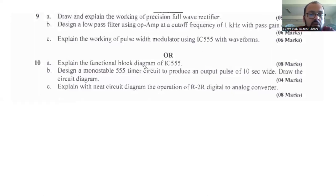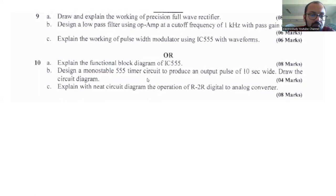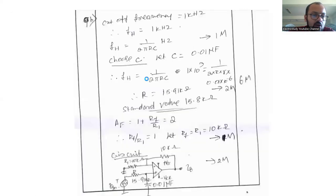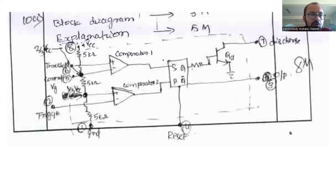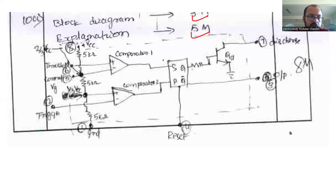We will now move on to question 10a: explain the functional block diagram of the 555 timer IC. This is a very important question and it is repeating, so please don't leave it. Elaborate on the internal structure of the IC — illustrate the components available inside in a proper manner. The block diagram explanation carries 5 marks.